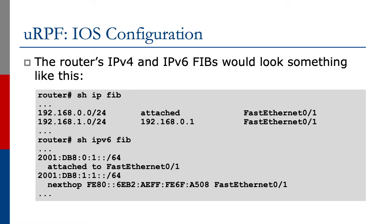The router's IPv4 and IPv6 FIBs would look something like this. In the IPv4 FIB, using 'show ip fib', we see two entries: 192.168.0.0/24 is attached and reachable through FastEthernet0/1, and 192.168.1.0/24 has a next-hop of 192.168.0.1 and is also reachable through FastEthernet0/1. For the IPv6 FIB, 2001:db8:0:1::/64 is attached to FastEthernet0/1 and 2001:db8:1:1::/64 has a next-hop via the link-local address shown, also reachable through FastEthernet0/1.